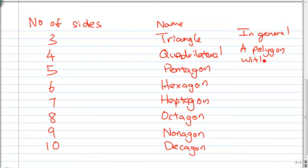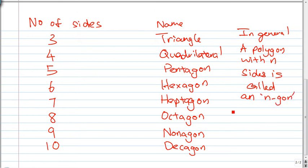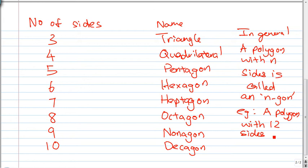If a polygon has ten sides it's called a decagon. In general, a polygon with n sides is called an n-gon. For example, a polygon with 12 sides is called a 12-gon.